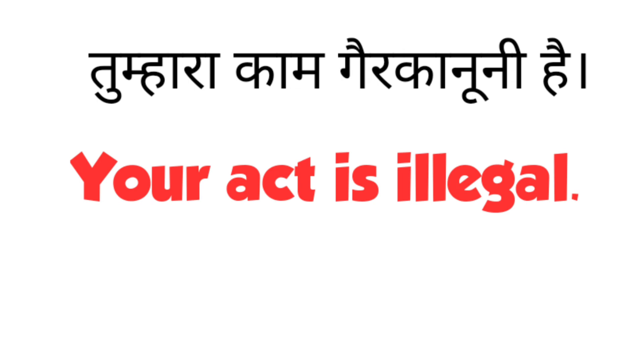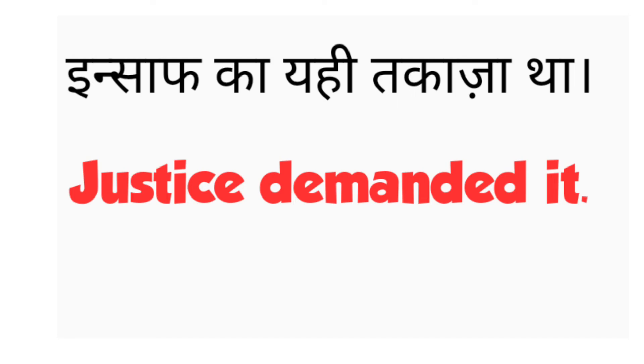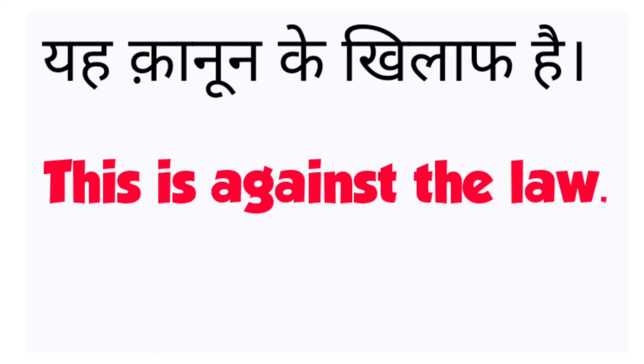Your act is illegal. Your act is illegal. The next sentence is: justice demanded it. Justice demanded it. And the next sentence is: this is against the law. This is against the law.